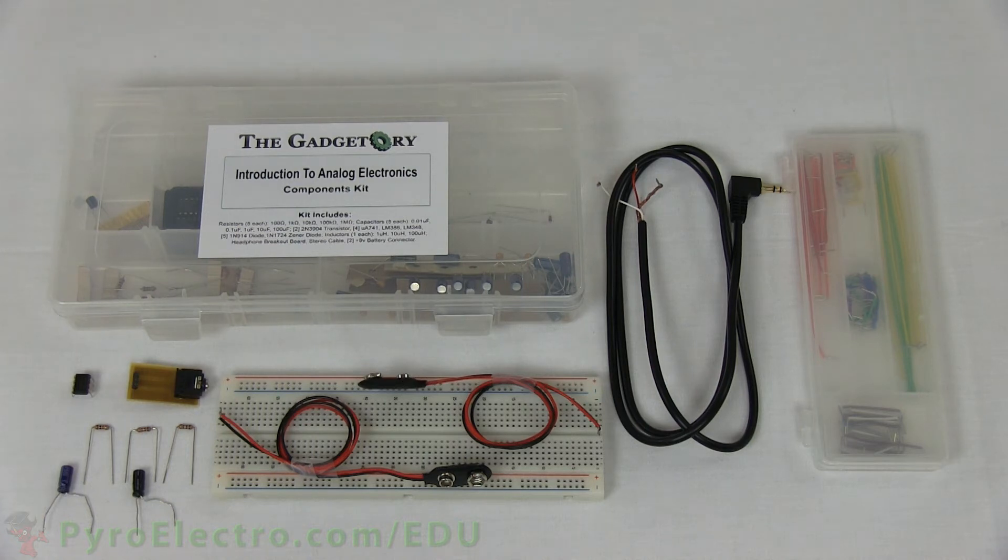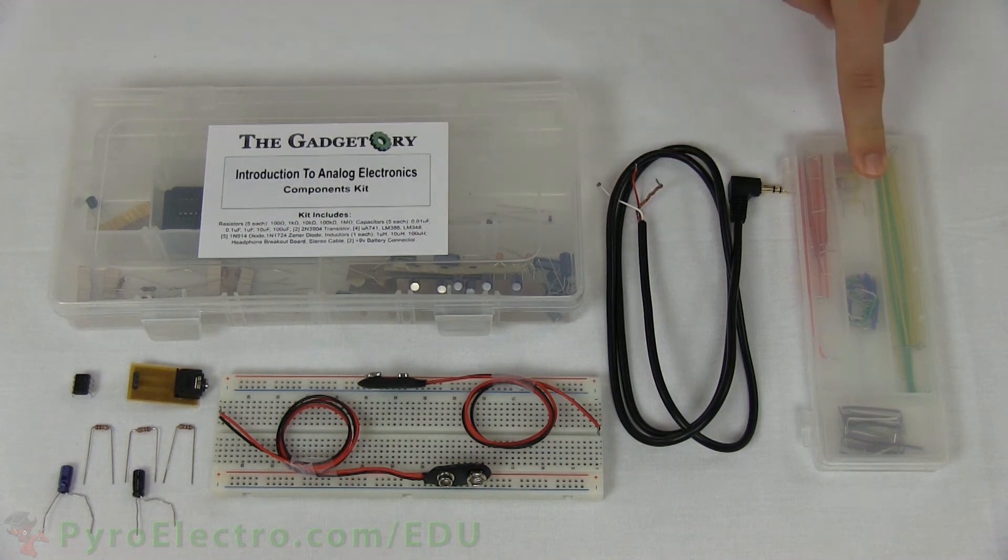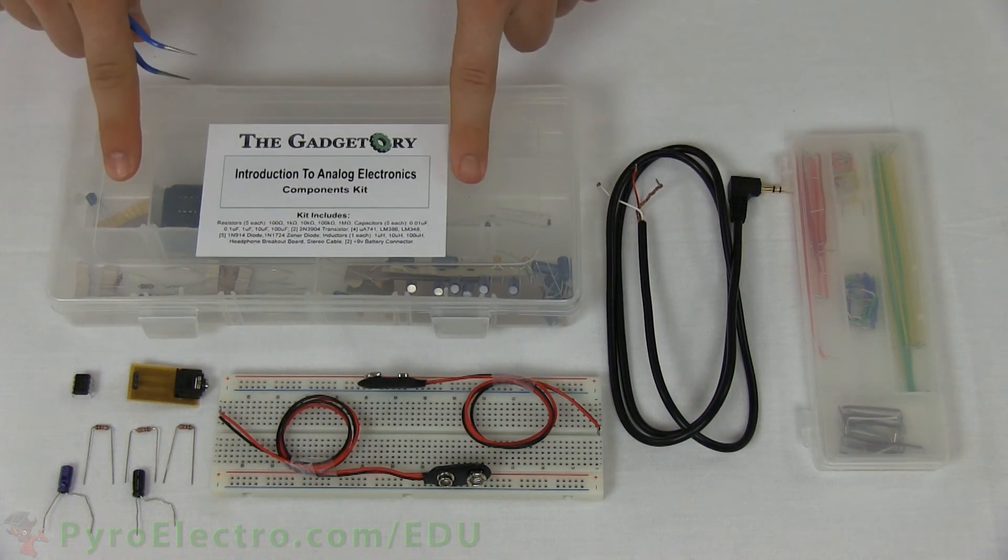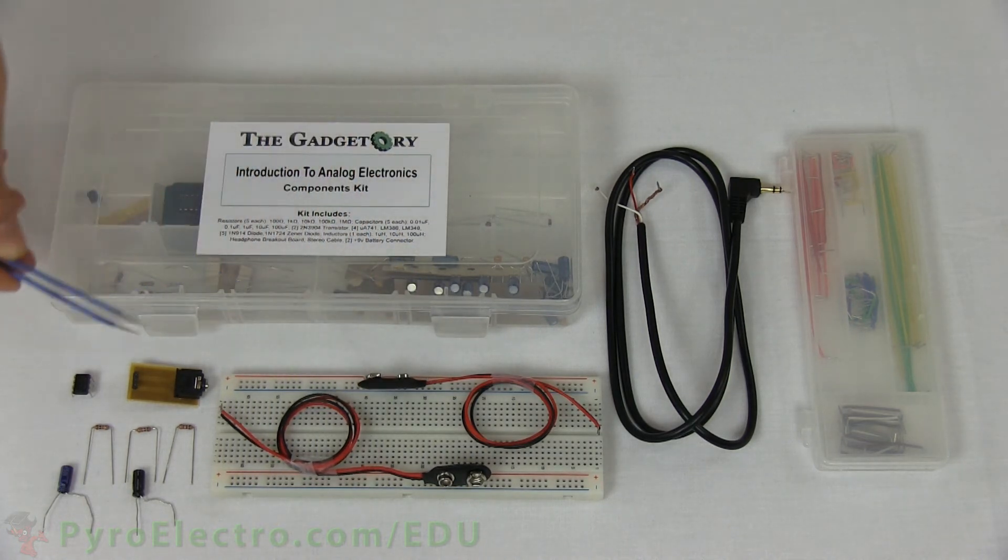To build this circuit, you will need a breadboard, jumper wire kit, and from the analog parts kit, a stereo cable with exposed wires, two 9-volt battery connectors, an audio jack breakout board, 741 op-amp, two 1 kilo-ohm resistors, one 10 kilo-ohm resistor, and two 10 micro-farad capacitors.